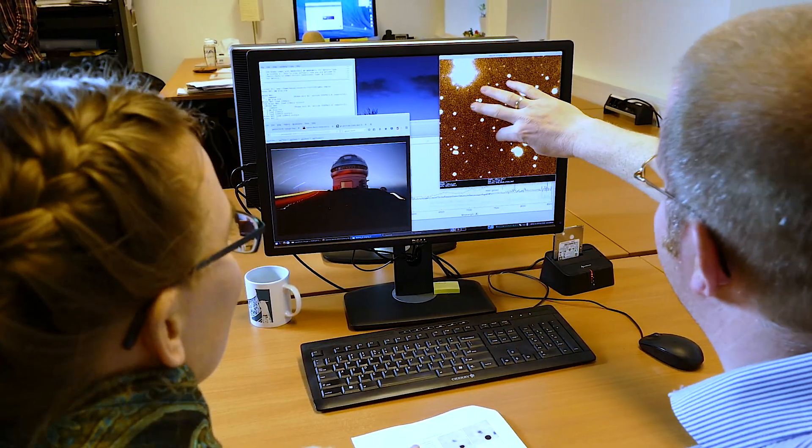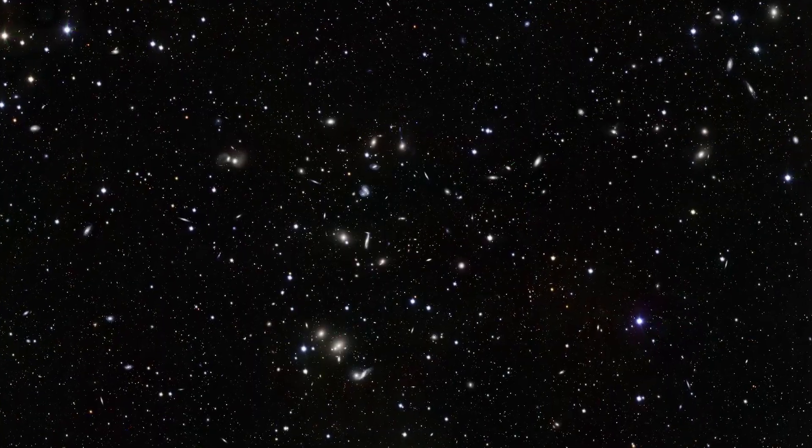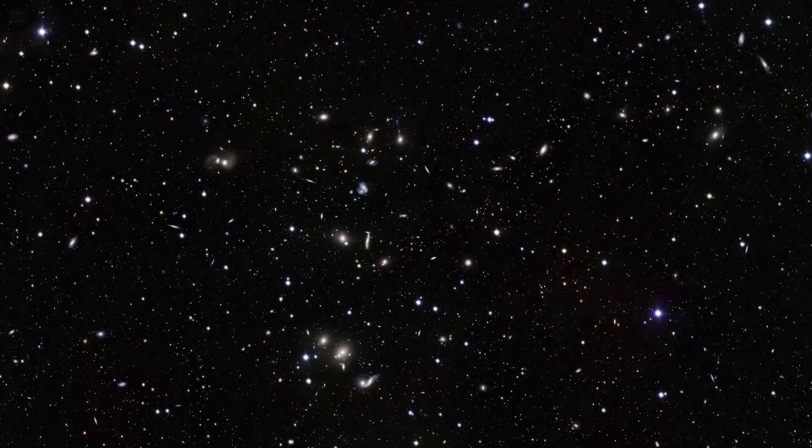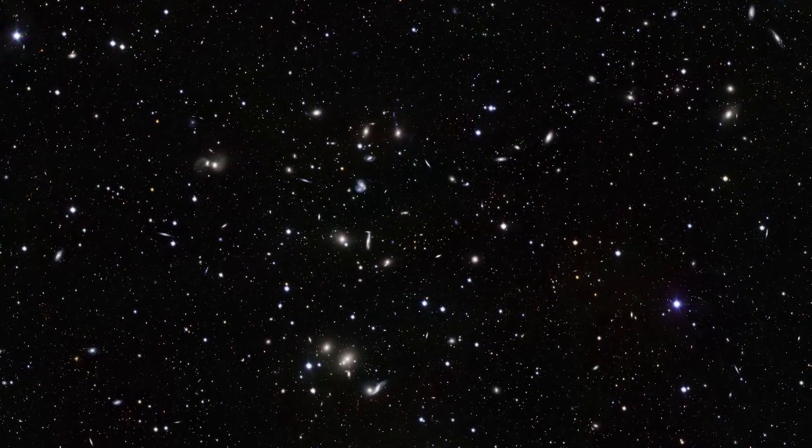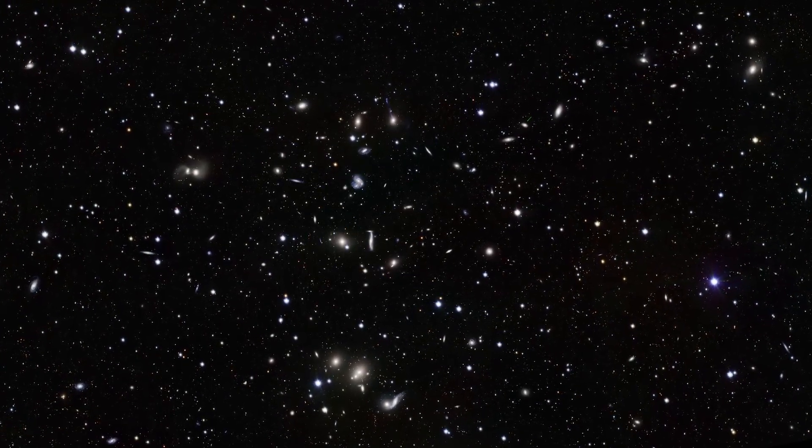Thanks to the accurate sky localization of the VLA and the EVN, we used a large optical telescope, the Gemini North Telescope in Hawaii, to get optical images and spectra of the host galaxy. We found that it's a galaxy about three billion light years away, and it's a dwarf galaxy, about a thousandth the mass of our own galaxy.